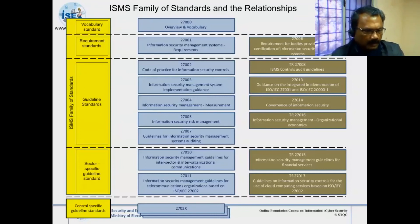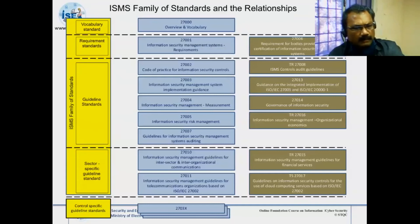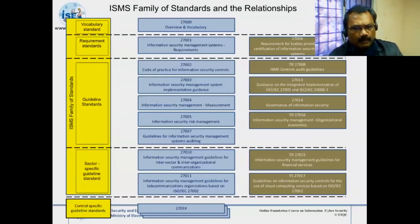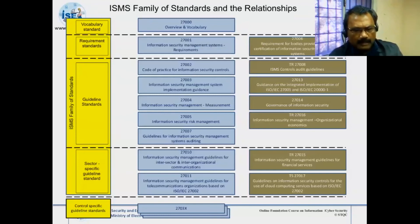For 27004: once you have identified controls, prepared manuals, defined scope, and implemented everything, to measure the effectiveness of that implementation you refer to 27004. For 27005: when you are planning to go for ISMS and need to know which assets and information to consider and what kind of risk assessment needs to be done, you refer to 27005.